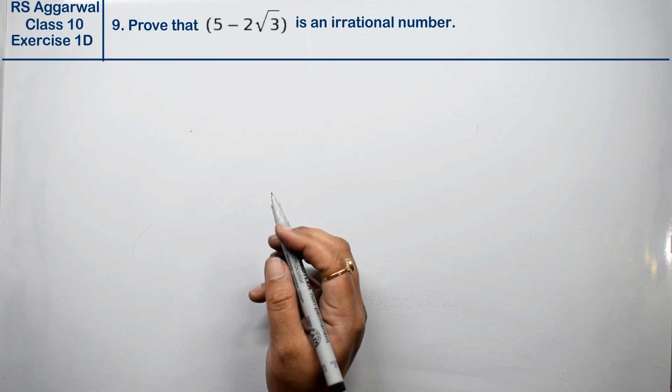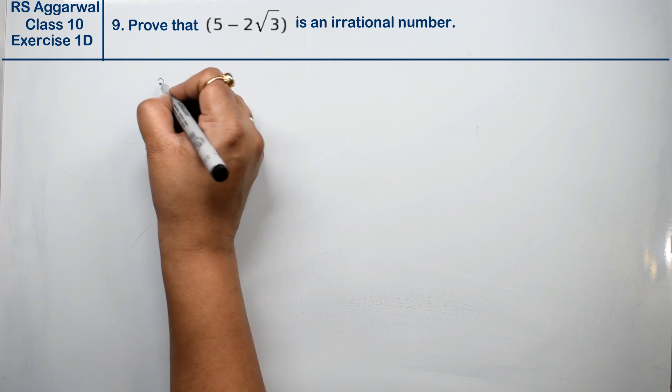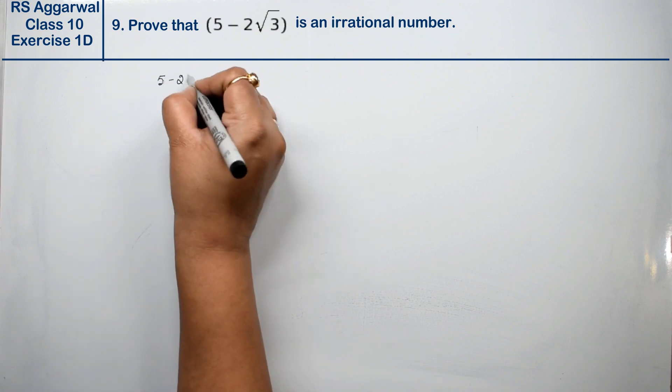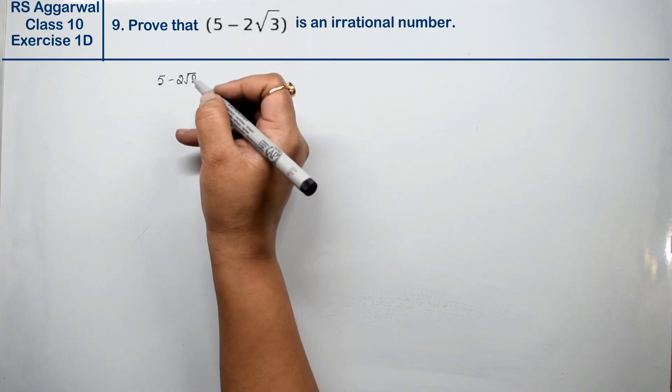Let's do question number 9 of exercise 1D, that is real numbers. Question number 9 is prove that 5 minus 2 root 3 is an irrational number. Let's prove that this is an irrational number.